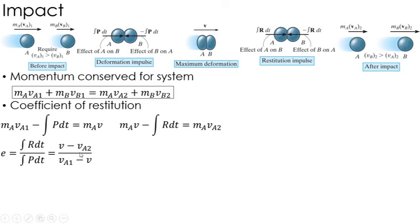I can get a similar equation for particle B, just negative of it. So instead of V minus V_A2, it's going to be V_B2 minus V. Again, that's because of Newton's third law, my impulses are in the opposite directions here. So all the signs are flipped.